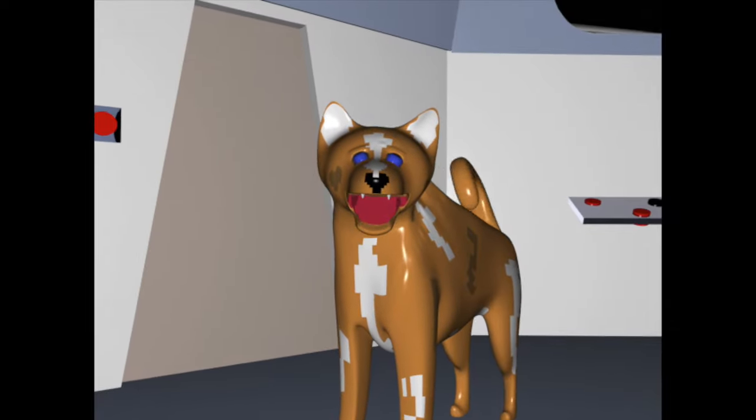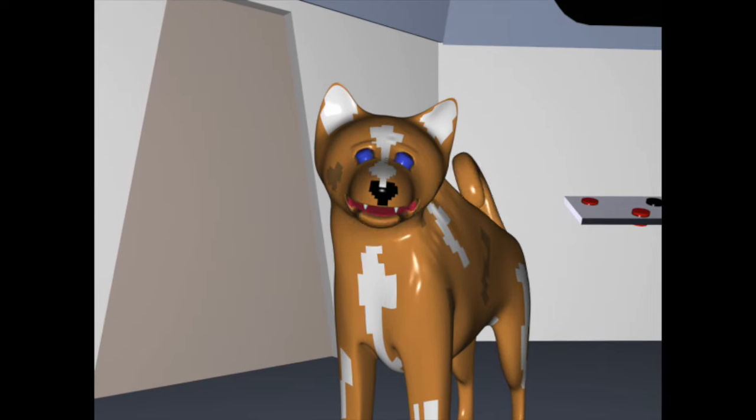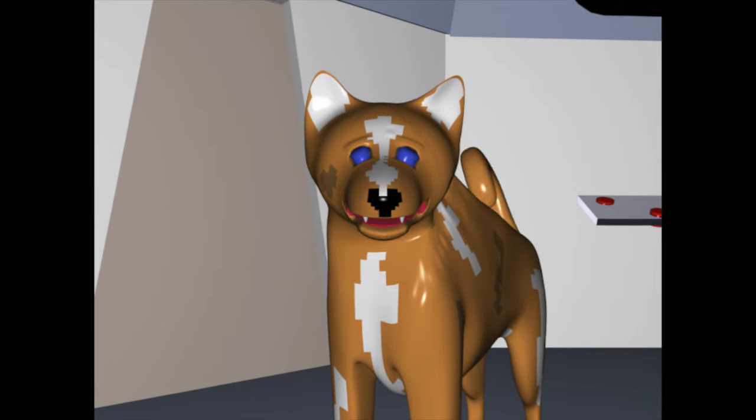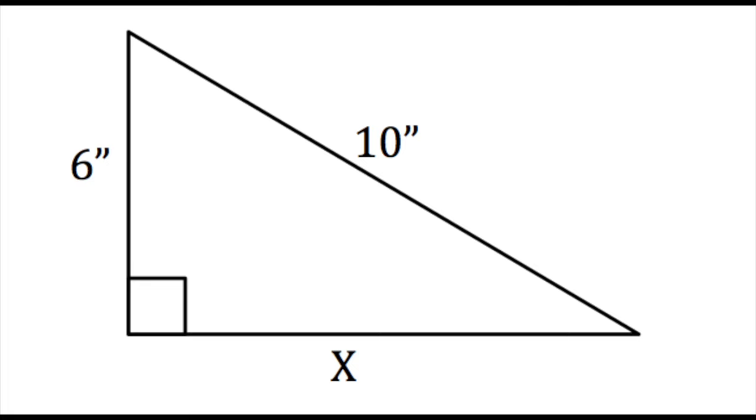What if we know the hypotenuse but don't know the measure of one of the legs? In this example, we have one leg that is 6 inches, another leg that we don't know the measure of, and the hypotenuse that we know is 10 inches.